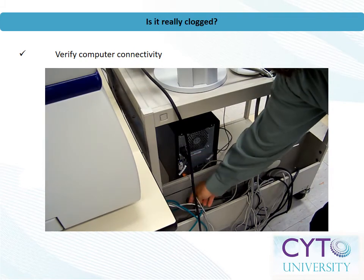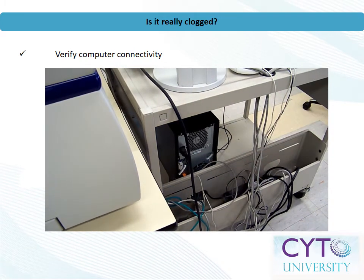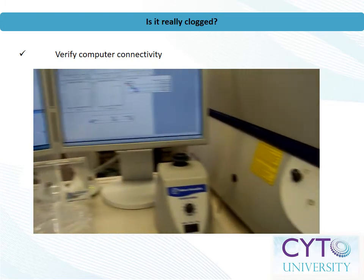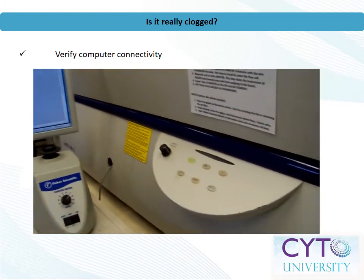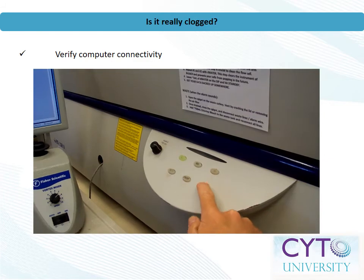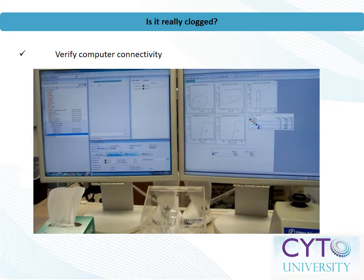Next, we want to verify that the cytometer's workstation has not physically or electronically lost connectivity with the cytometer. On some systems, connectivity can be confirmed by acquiring during a prime cycle. If you can see air bubble events appear, the cytometer is connected, and there may in fact be a clog.